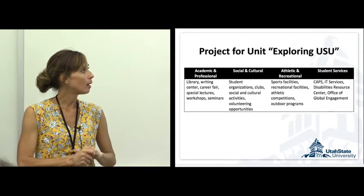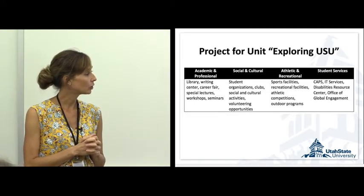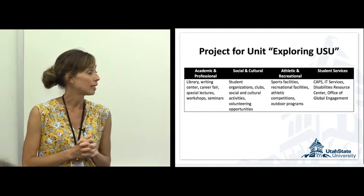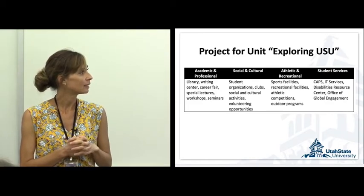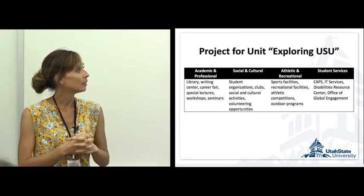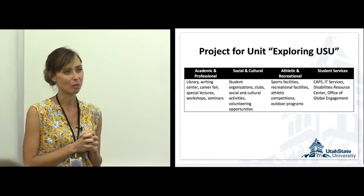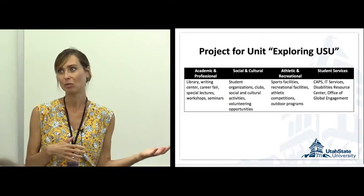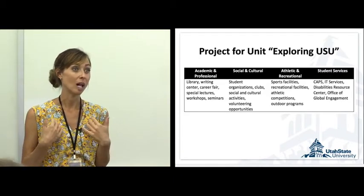Another group researched social and cultural resources — student organizations, clubs, social and cultural activities, and volunteering opportunities. The next group covered athletic and recreational resources like sports facilities, recreational facilities, athletic competitions, and outdoor programs. The fourth group presented on student services such as CAPS, IT services, disabilities resource center, and the Office of Global Engagement. It was an eye-opening experience for most students because they were really not familiar with most of these resources and programs on campus, and they said it was helpful for them.